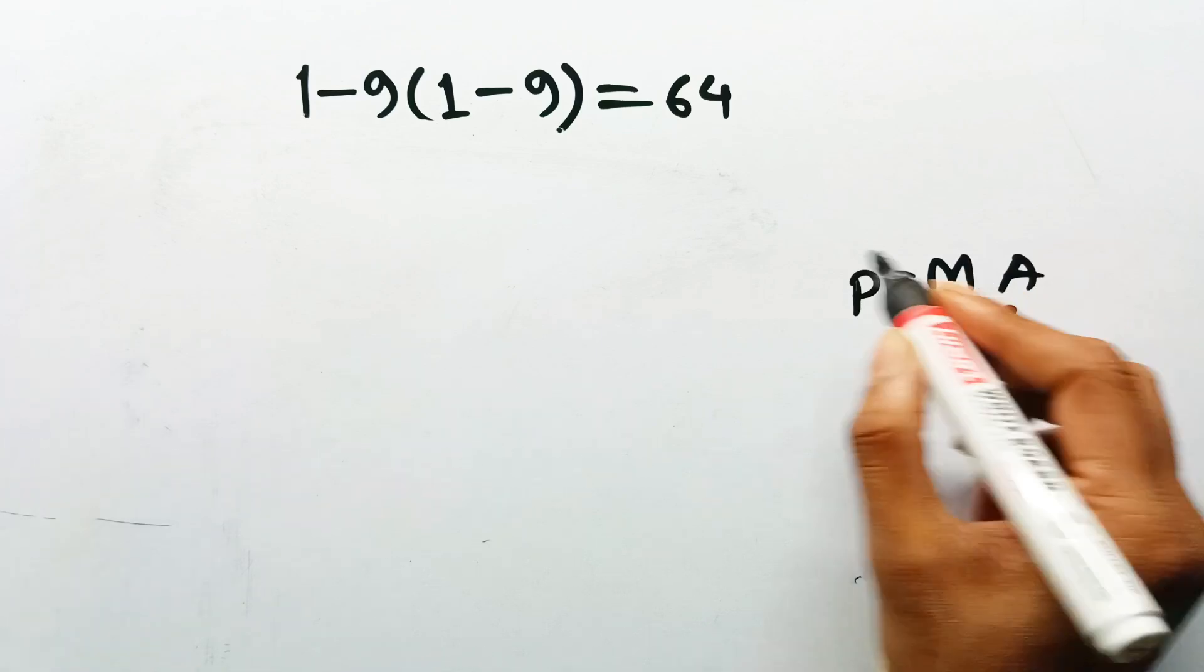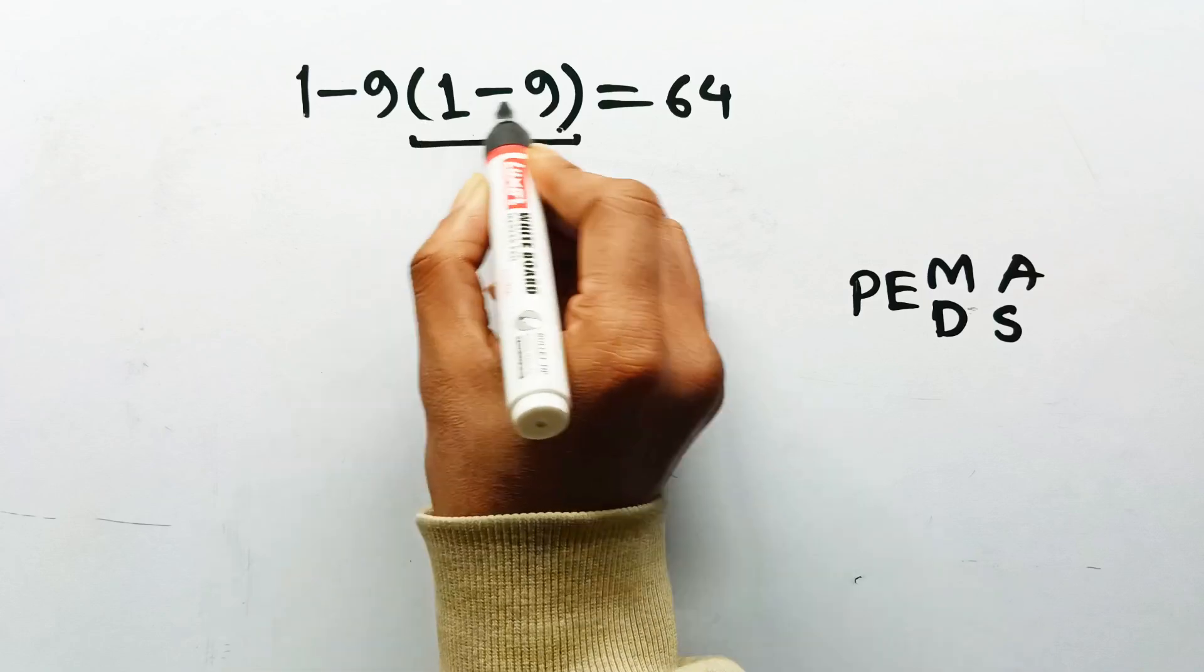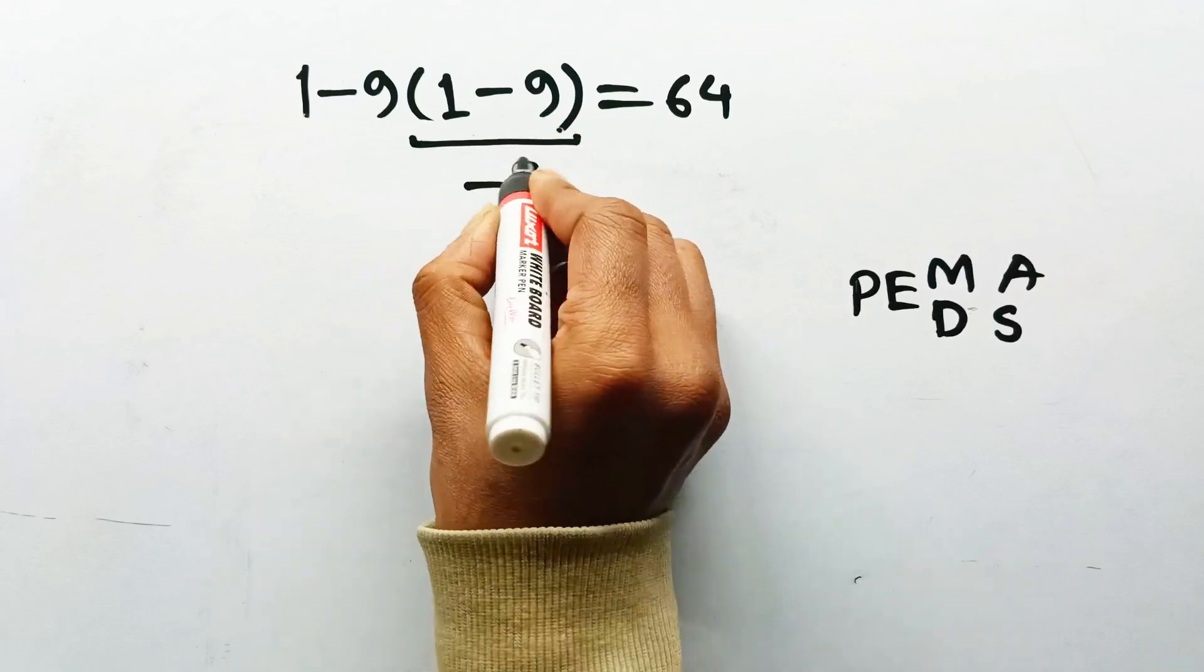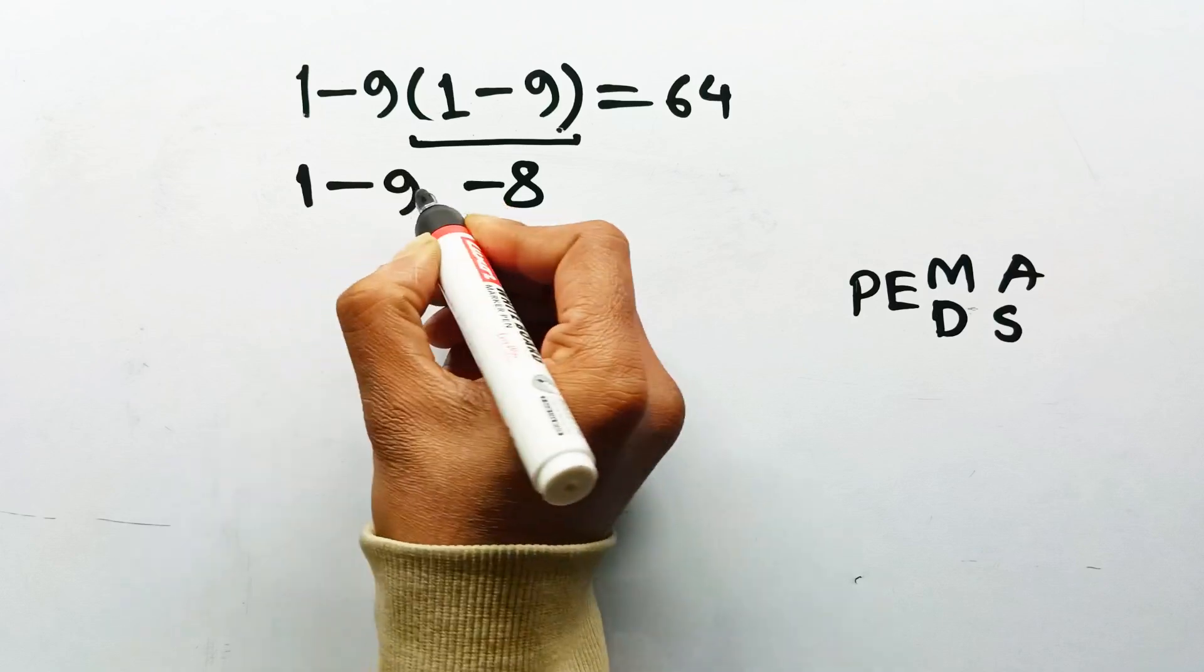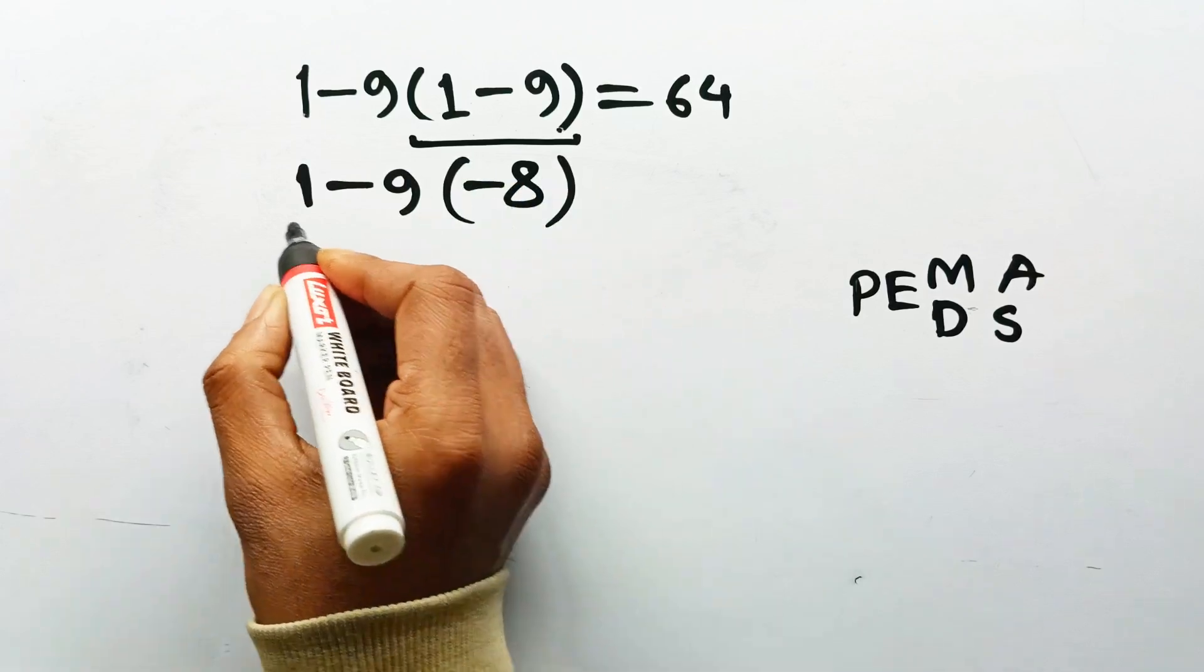So, yes, parentheses first. Inside the parentheses, 1 minus 9 equals negative 8. So, now the expression becomes 1 minus 9 times negative 8. And this is where people slip.